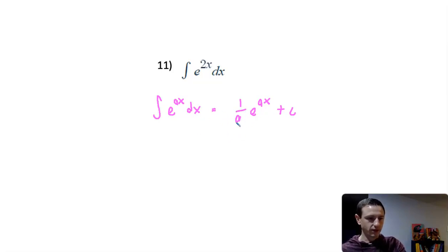So in this one, integrating e^(2x) dx, our a term would be 2, so it would be 1 over 2 times e^(2x) plus c.